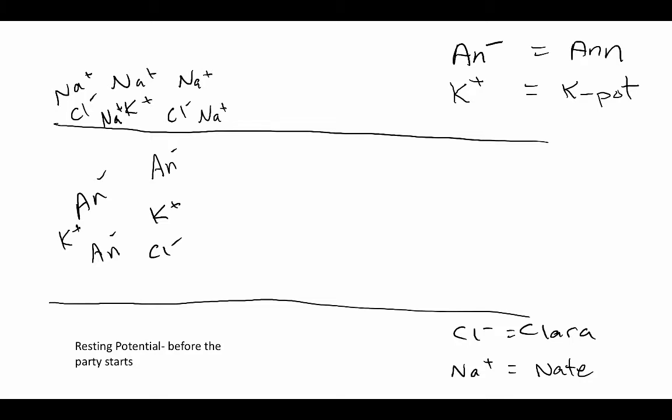And there you have it, our resting potential. Notice that because Nate is all over the place on the outside, just far outnumbering how much Clara there is on the outside, a little bit of K-pot on the outside as well, the outside of that axon has a positive electrical charge. The inside, primarily because of An, there's a lot of her on the inside, has a negative electrical charge. That's what resting potential is. Negative on the inside, positive on the outside.